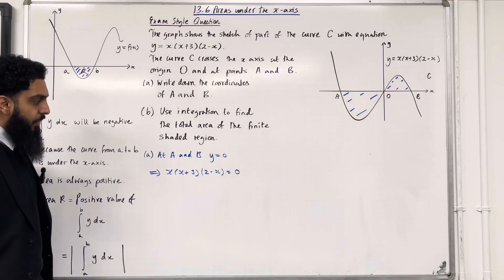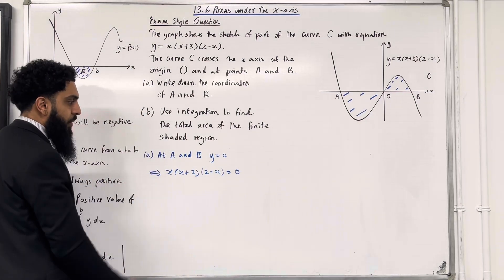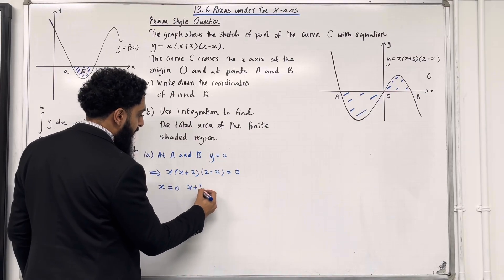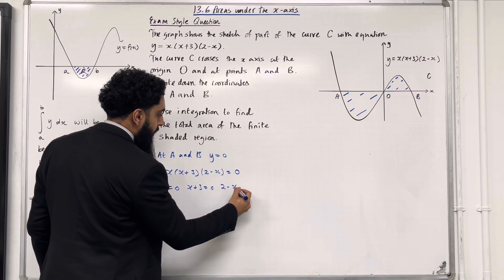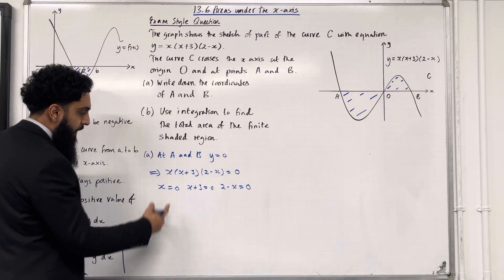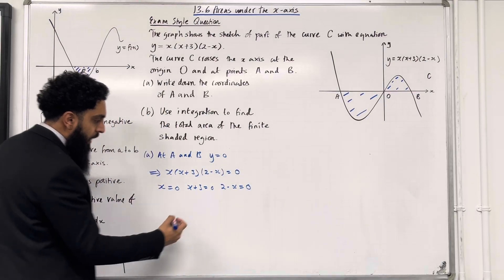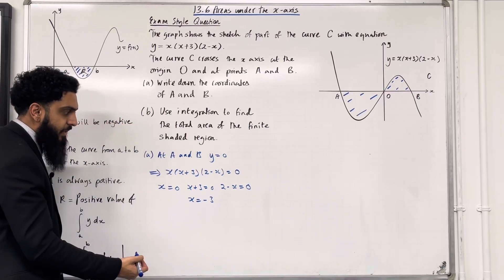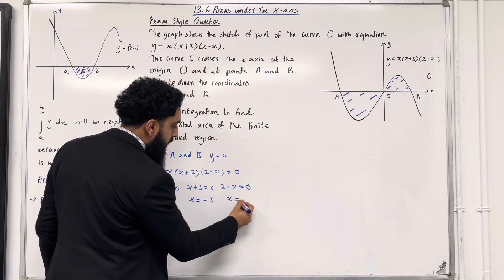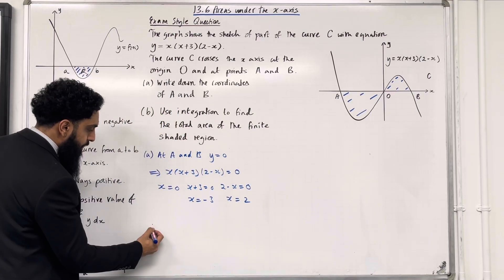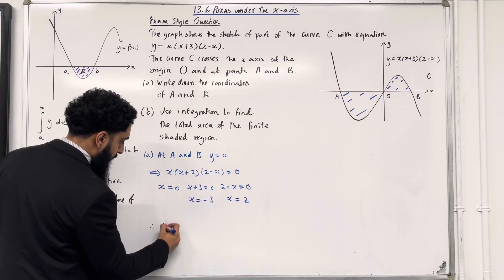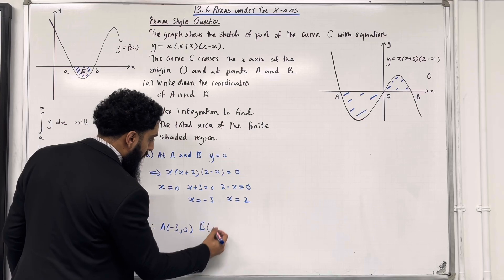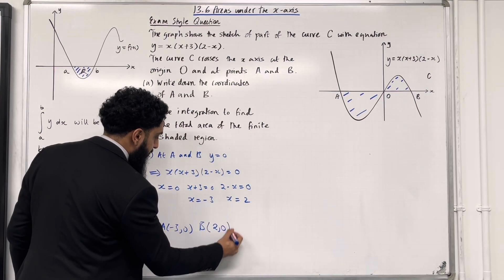We can set each bracket equal to 0, and we can also set x equal to 0. So we've got x equals 0, x plus 3 equals 0, and 2 minus x equals 0. The first solution is x equals 0, the second solution is x equals minus 3, and the third solution is x equals 2. Therefore, the coordinate for A would be (minus 3, 0) and the coordinate for B would be (2, 0).